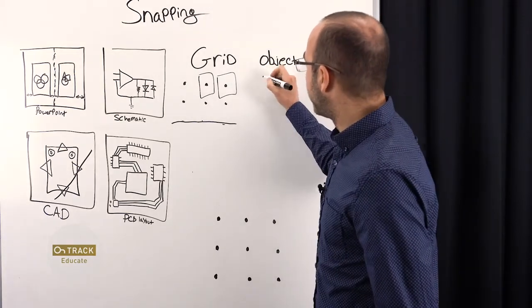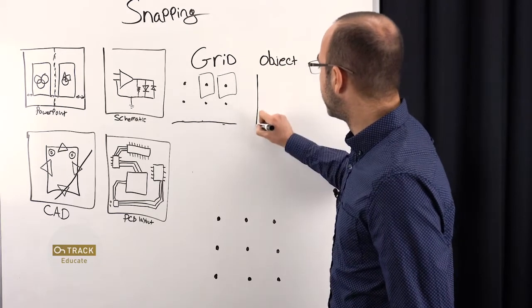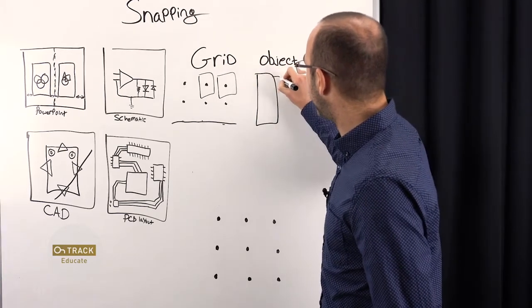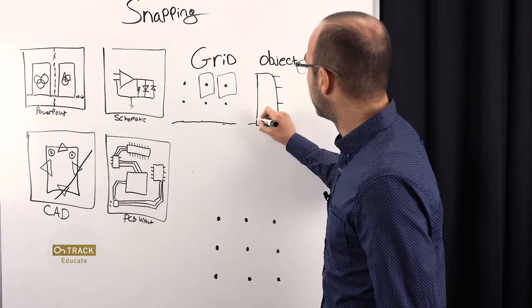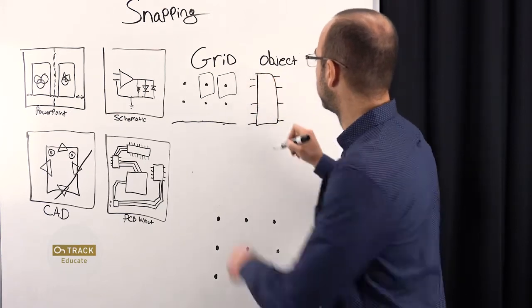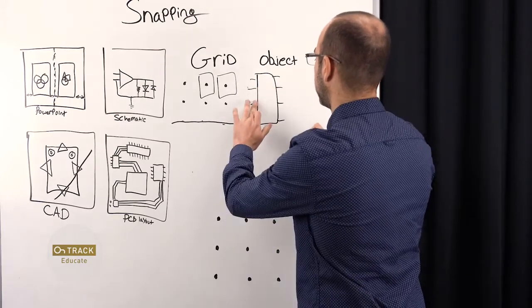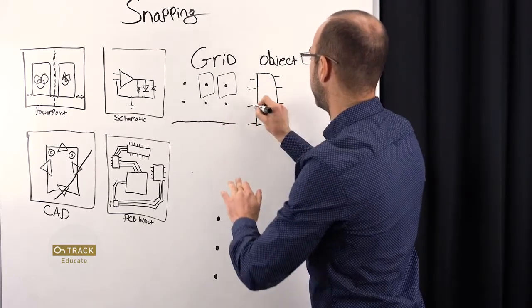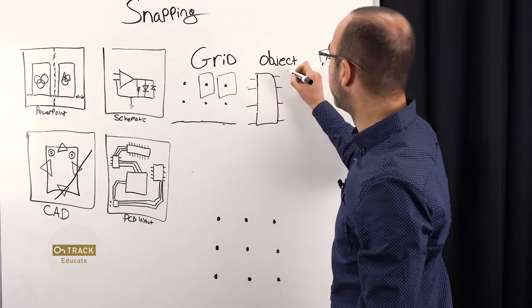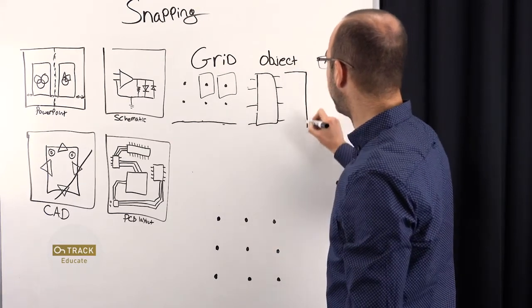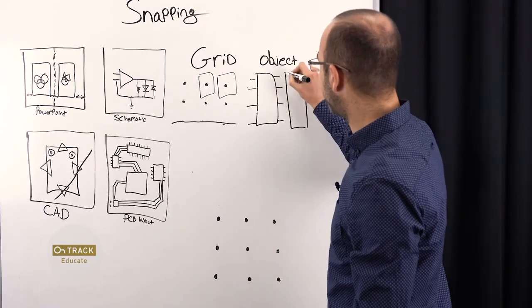So object snapping is great for these situations. So let's have two components here. There we go. Make that nice and neat. We can align the top of these objects together.